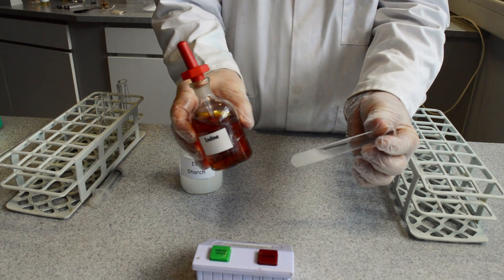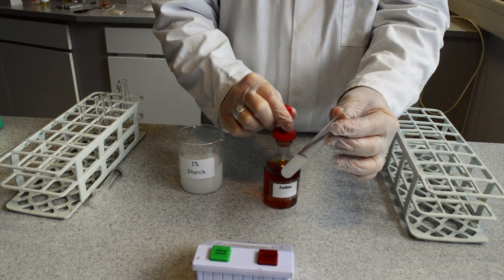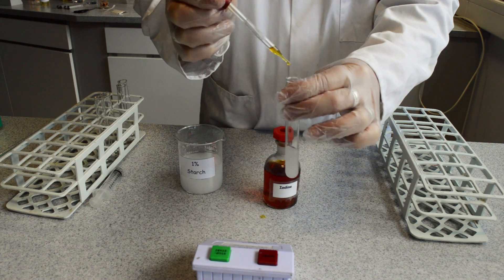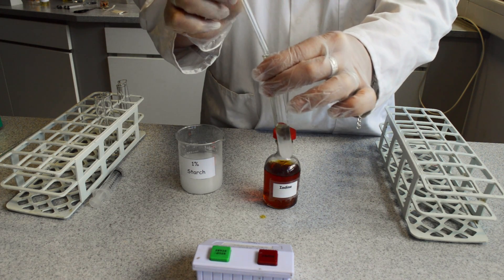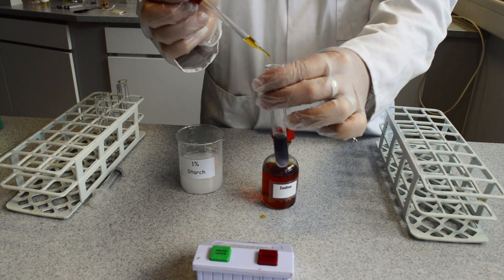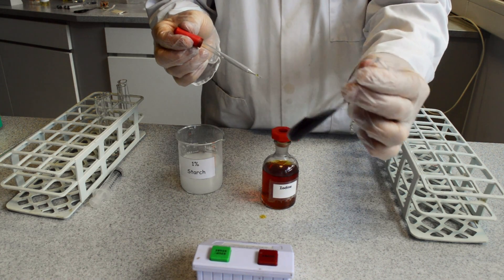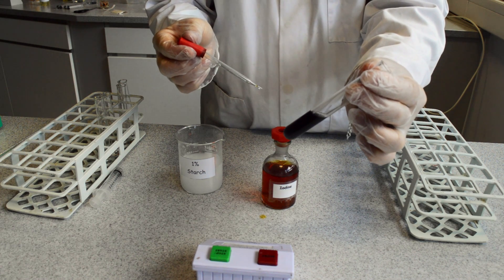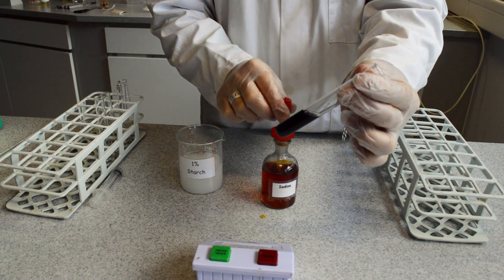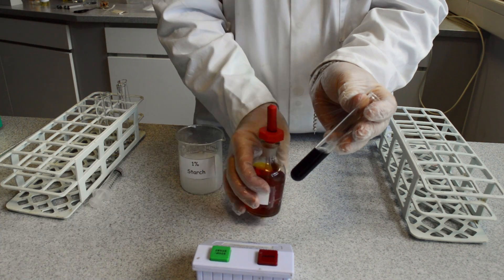Then add several drops of the iodine solution. You will notice an immediate colour change when the iodine is introduced to the starch. It becomes blue black as opposed to the light brown it is in the bottle. Here is an example of the colour difference.